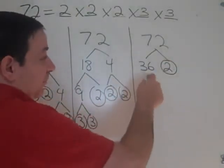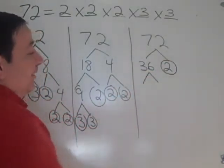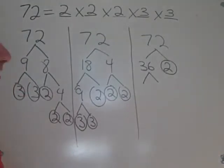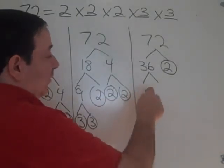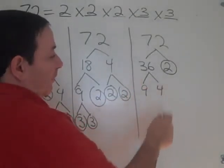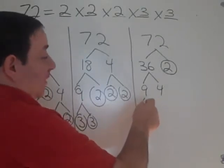2 is prime. 36 is not. You can say it's 2 times 18. You can say it's 9 times 4. You can say it's 6 times 6. How about we go with 9 times 4.